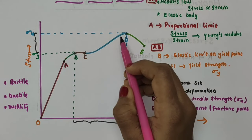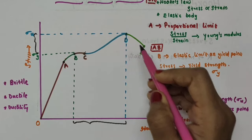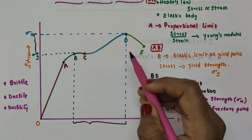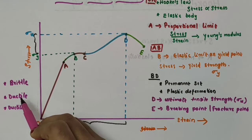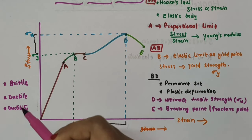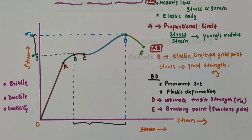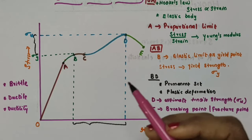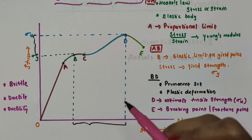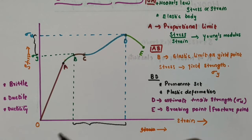If the ultimate strength point D and the fracture point E are far apart, the material is said to be ductile. Examples of ductile materials are steel, aluminium, copper, etc. Ductility is the ability of a material to get deformed without fracture. Ductile materials can be easily stretched into a wire or undergo other deformations under tensile stress without breaking.